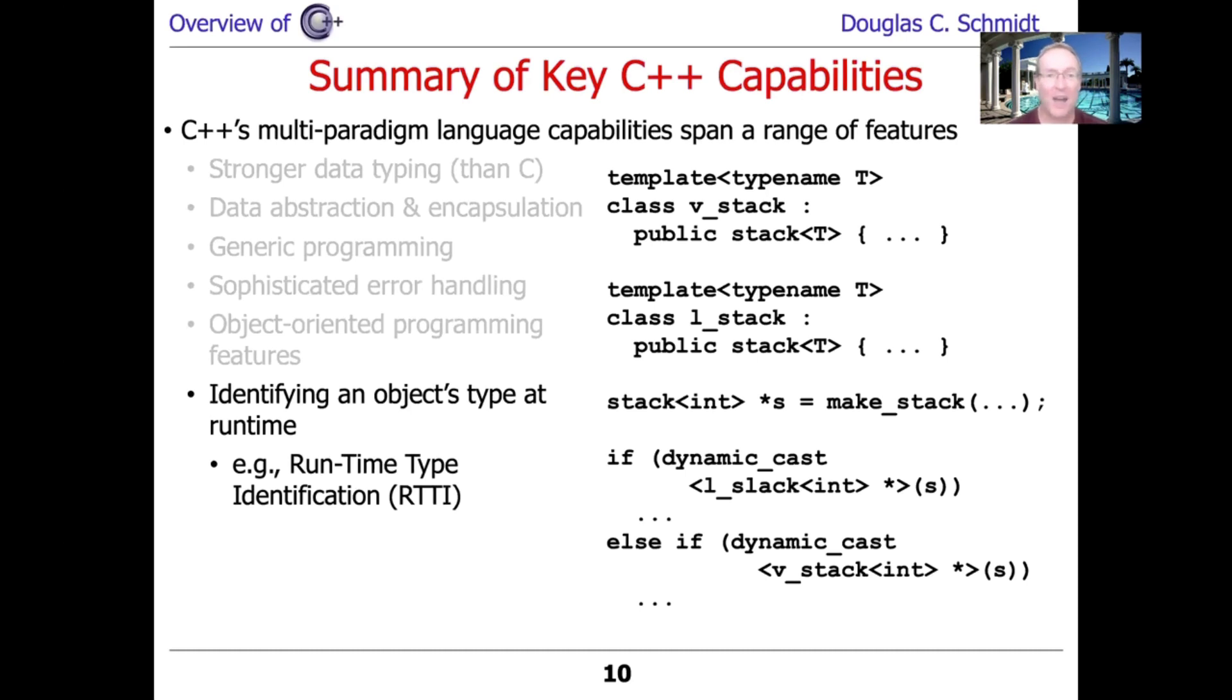The other thing I can do is once I've got myself a pointer to a base class, in this case stack, I can then go ahead and apply what's called runtime type identification to figure out what the actual derived class is, if I need it. So here you can see I have a little if statement. I say if dynamic cast LStack star S. So I'm saying if this stack pointer is really an LStack pointer, then do such and such. Otherwise, if it's a VStack pointer, do something else. And that's part of what's called runtime type identification. And we'll look at this a bit more later.